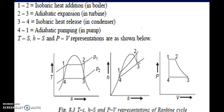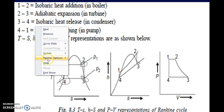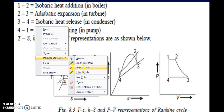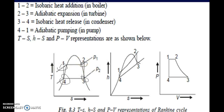We need to calculate the enthalpy at point 1, point 2, point 3, and point 4. The process from point 2 to point 3 is isentropic — isentropic work done means the entropy remains constant from point 2 to point 3. The turbine is totally insulated and there is no chance of any losses. So for the process 2 to 3, entropy s2 is equal to s3.